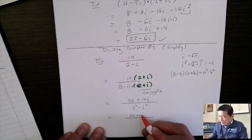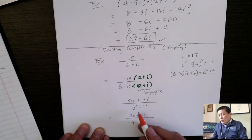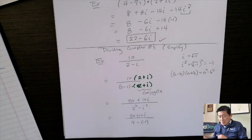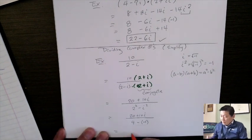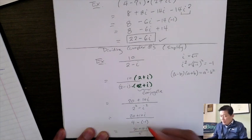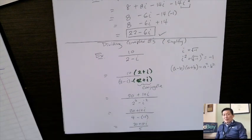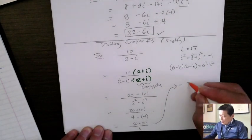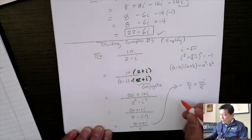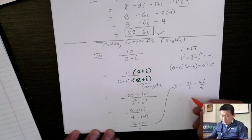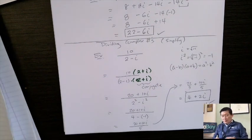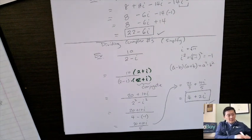On the top we get 20 plus 10i. On the bottom: 4 minus i squared. Since i squared is negative 1, that gives 4 minus negative 1, which is 5. So we have (20 plus 10i) divided by 5, which splits into 20 over 5 plus 10i over 5, giving us 4 plus 2i.